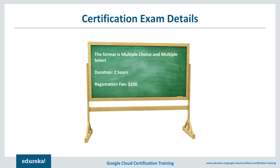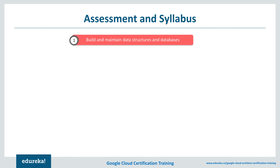The certification exam follows the same details and the same patterns — that is, it is multiple choice and multiple select. It has a duration of two hours and the examination fee is $200. Coming on to the assessment and syllabus part of this Professional Data Engineer certification, first of all, we have the building and maintaining data infrastructure. This includes future advances in data technology, changes to business requirements, awareness of current state and how to migrate the design to a future state, some data modeling, trade-offs and schema design.